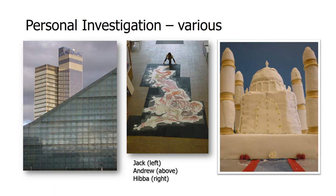Some different approaches to the personal investigation: on the left, Jack, who wants to work in photography, took many photos around town focusing on composition and cropping to make familiar street scenes more interesting and eye-catching. In the middle, Andrew did an enormous map of the British Isles as an anatomical diagram, with hearts, lungs, brains, and so on. Then Hibba explored the seven wonders of the world using different materials — this piece was the Taj Mahal done as a cake.